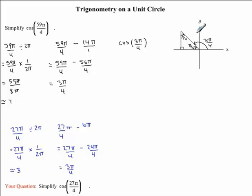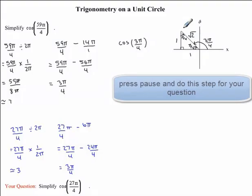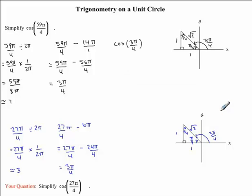This triangle should now be familiar to you, since this is one of our special triangles. Our hypotenuse side will be equal to √2, and our other sides will be equal to 1. I would now like you to draw the quadrant plane along with the triangle in the question you were given. You should have the same diagram as the one we drew together.